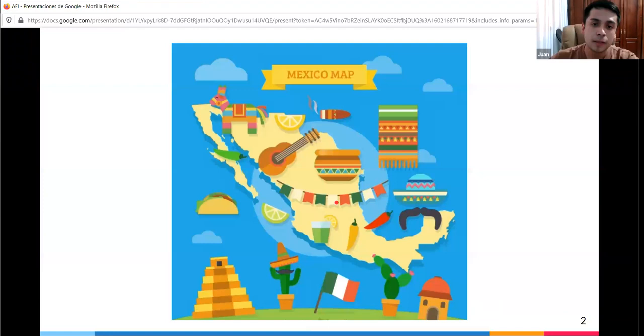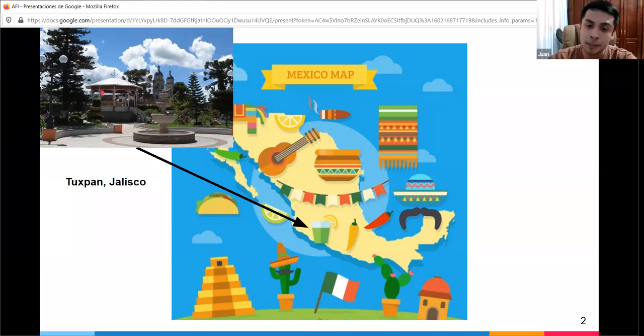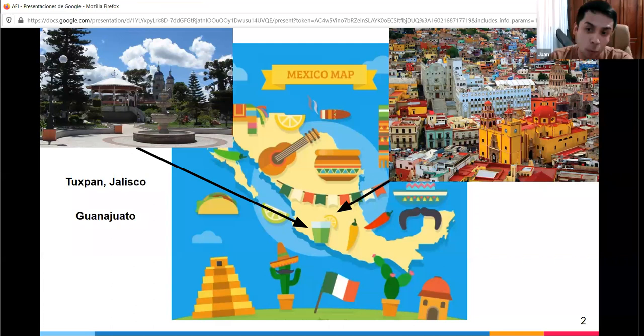For those who don't know him, Juan is from Mexico, born in Tuxpan Jalisco, a small town in the south. At age 16, he moved to Guanajuato to study engineering physics at the University of Guanajuato. He shows the colorful city with the main university building in white, noting there are lots of things to do.